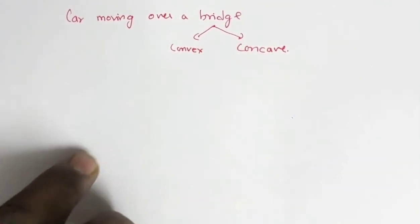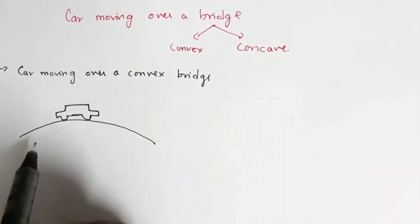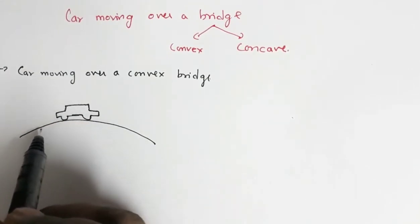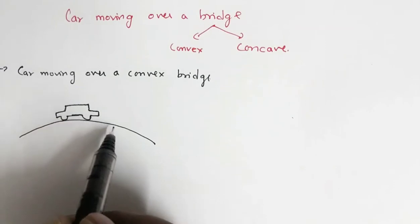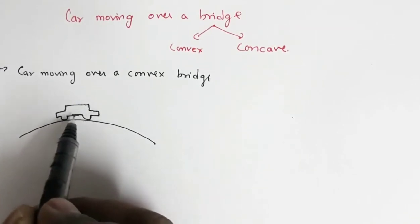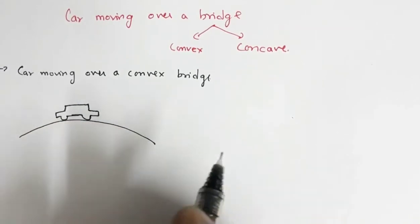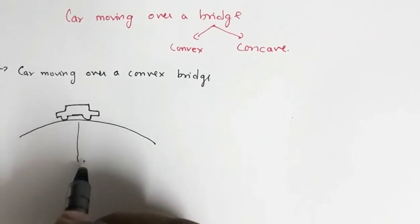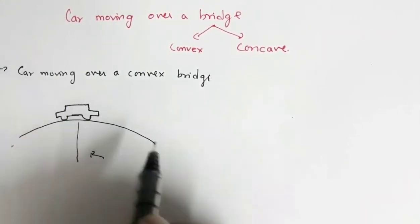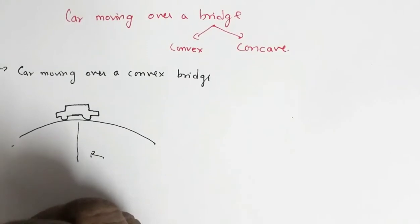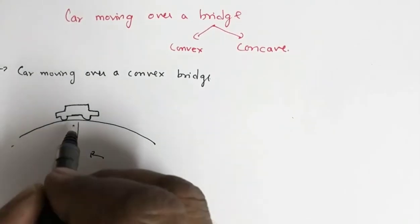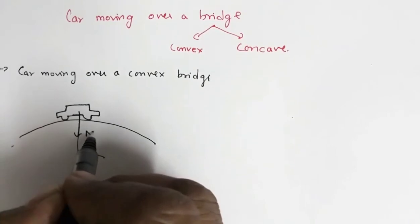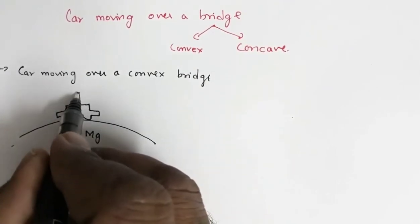Let's start the video. Here we have a convex bridge and a car of mass m is moving over this convex bridge with uniform speed v. Let's say r is the radius of curvature. At this particular position, the weight of the car mg acts in the downward direction and N is the normal reaction.